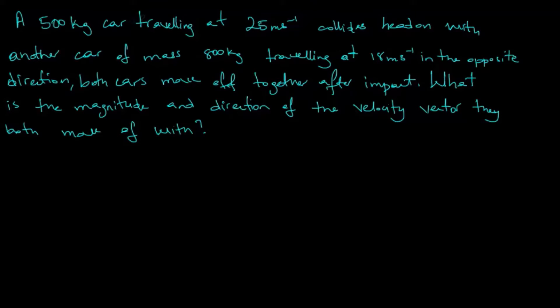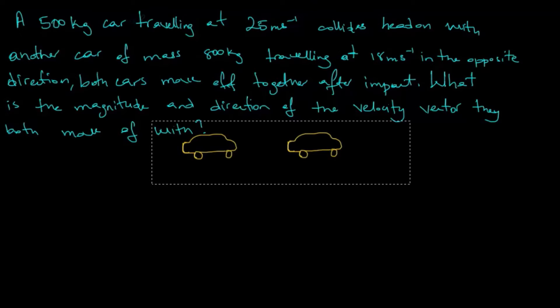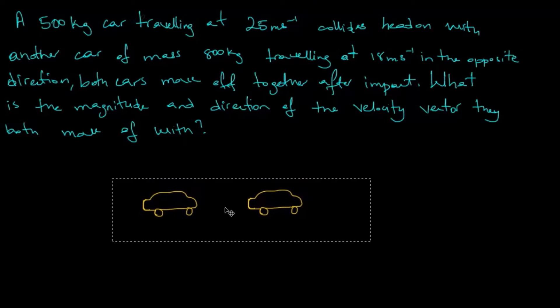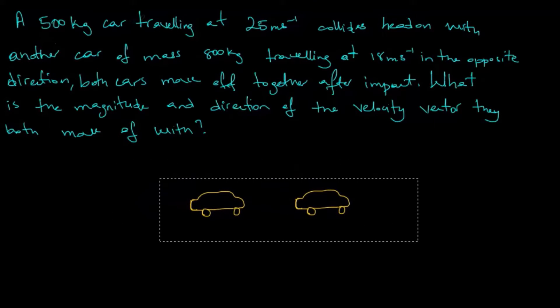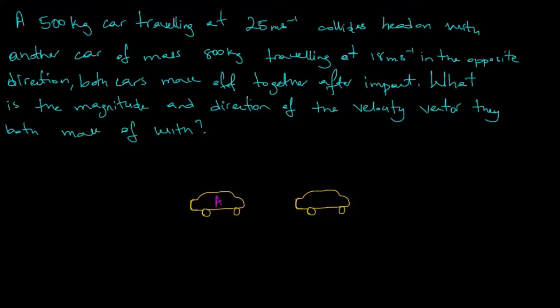To consider a question like this, it is best to make a simple sketch so we can actually see what's going on. The sketch doesn't necessarily mean we need to draw cars that look like Lamborghinis — just something simple. So here's a sketch with our two cars. We can call this car A and car B. Car A has a mass of 500 kilograms and is moving with a speed of 25 meters per second, while car B has a mass of 800 kilograms and moves with a speed of 18 meters per second.